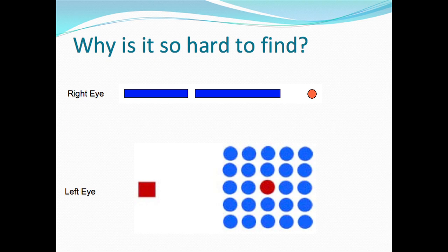Did you find your blind spot? It should have been about 20 centimeters from your face. So why is it so difficult to find our blind spot? Did you notice that when you looked at the blue line, it looked continuous instead of segmented? What our brain does is use the surrounding information to fill in our blind spot. That's why we saw the line as continuous, and also why the red circle appeared to be a blue circle.